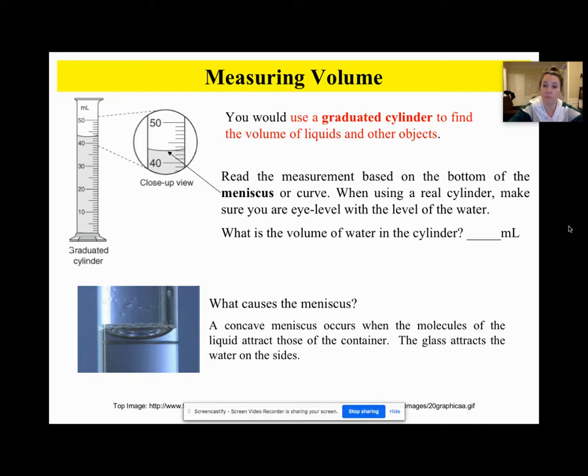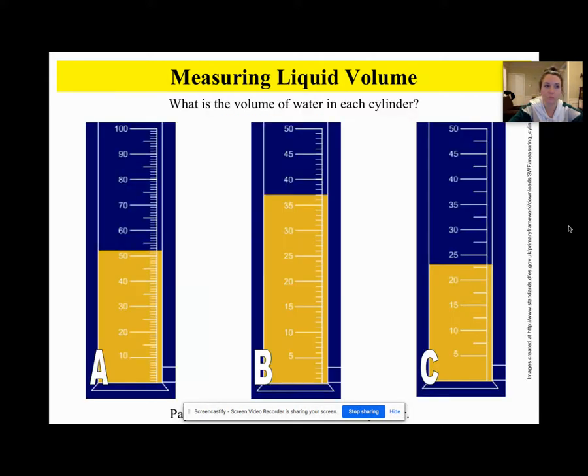Hopefully you got 43 milliliters, good. Then I just have an example or an explanation of the meniscus, which I just said. So now look at these three graduated cylinders and I want you to figure out how many milliliters, let's say they're milliliters, in each of these. So pause here and check it out. Okay, A you should have gotten 52, B you should have gotten 37, and C you should have gotten - I got 23. So 22.5 was the line and then it was a little higher, so 23.